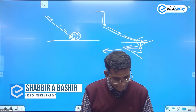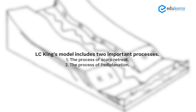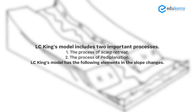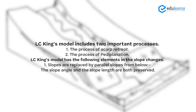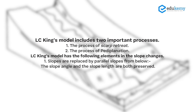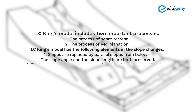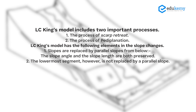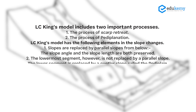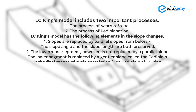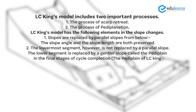LC King's model includes two important processes: number one is the process of scarp retreat, and number two is the process of pediplanation. LC King's model has the following elements: slopes are replaced by parallel slopes from below — the slope angle and slope length are both preserved. The lowermost segment, however, is not replaced by a parallel slope; it is replaced by a gentler slope called the pedi-plane in the final stages of cycle completion.